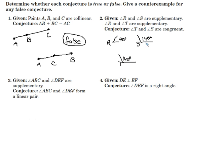And then the conjecture is T and S are congruent. And as we can see from what I made here, these two angles have to be, because they're both supplementary to R. So this is a true conjecture.